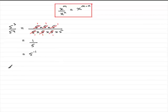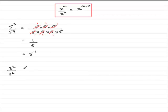Let's look at another one. Suppose we had 3 squared divided by — it's got to be the same base value — so 3 to the power 6. According to this rule, this would be 3 to the power minus 4 — that's 2 take away 6.